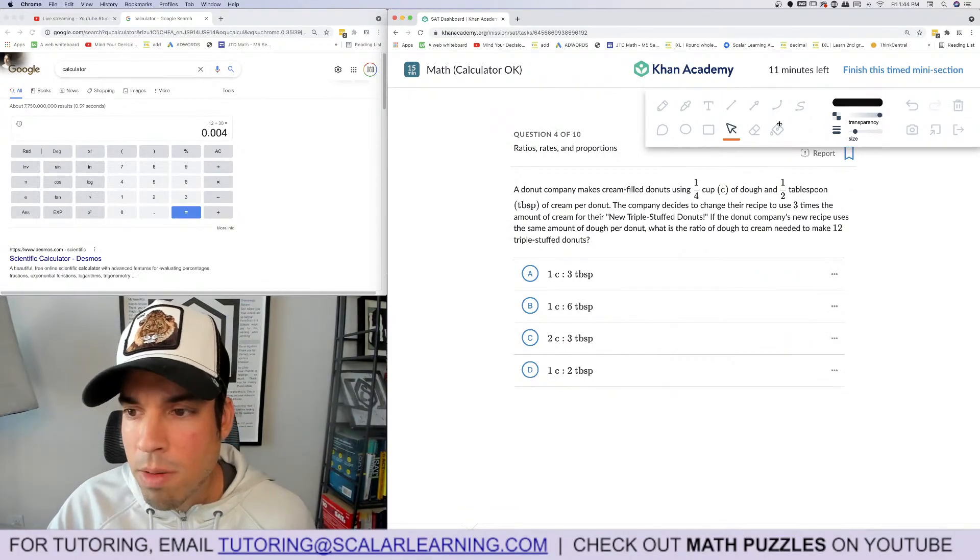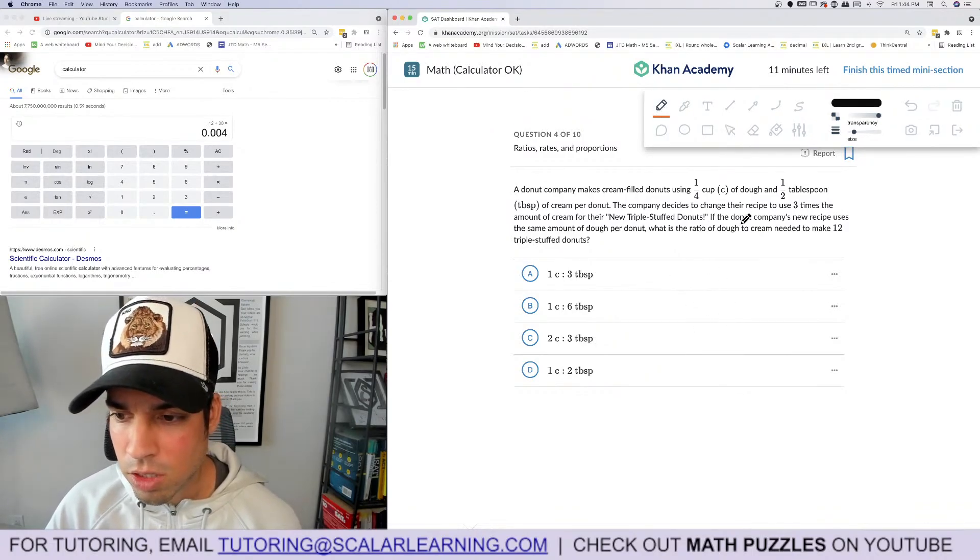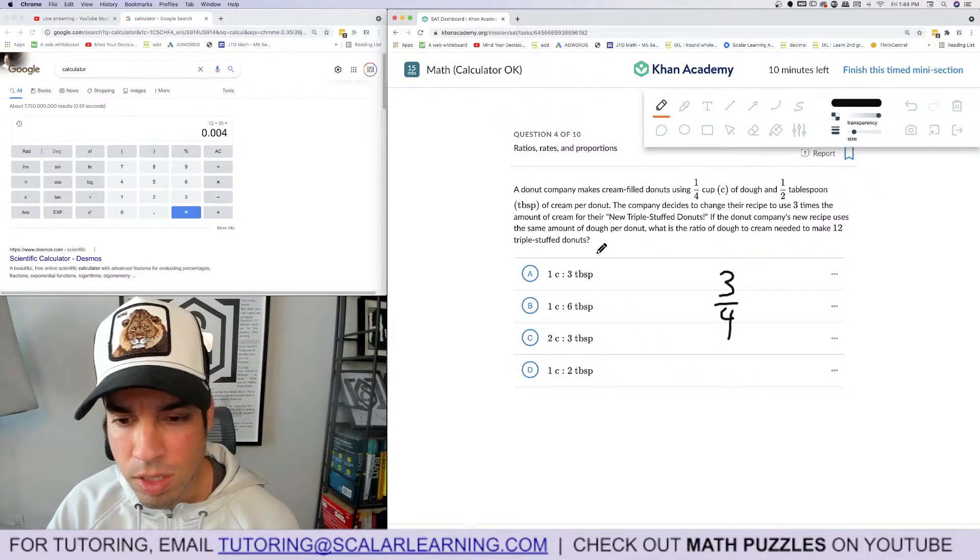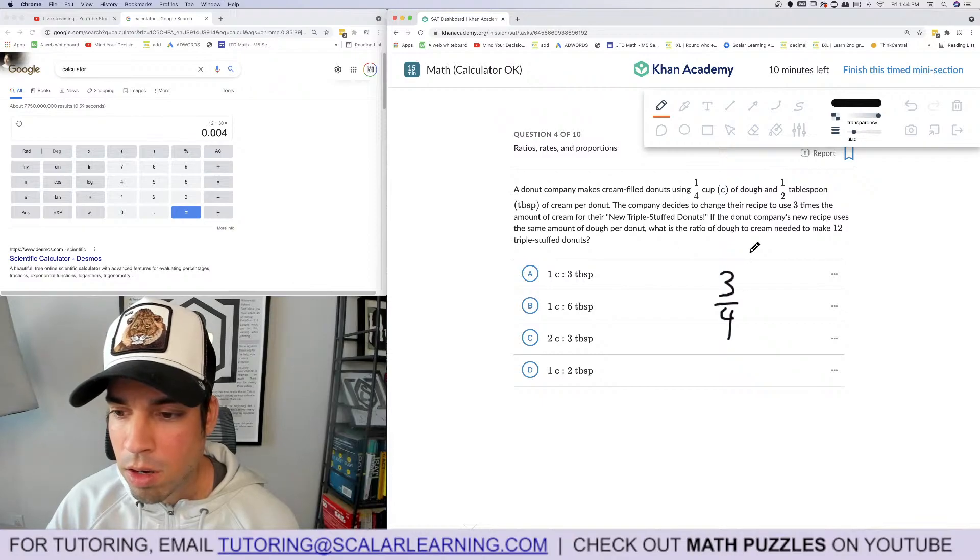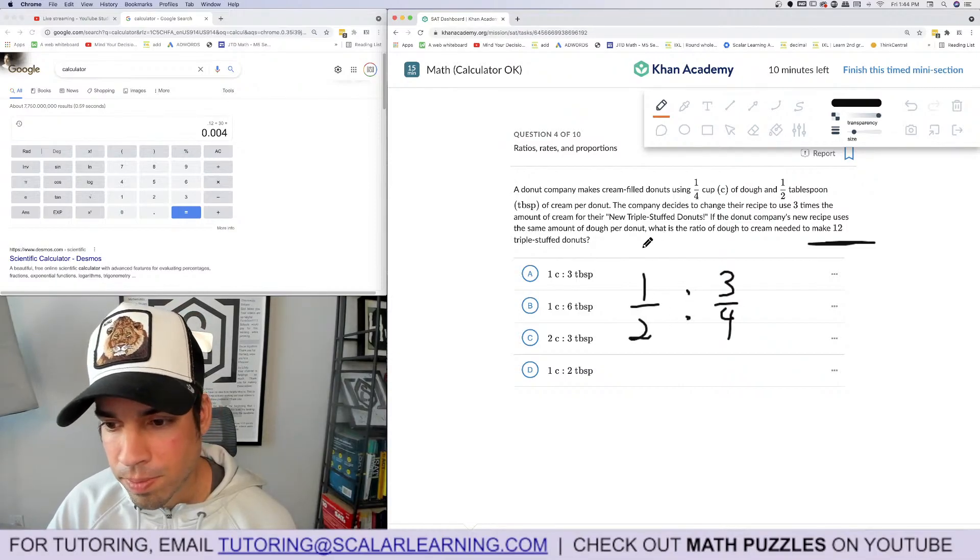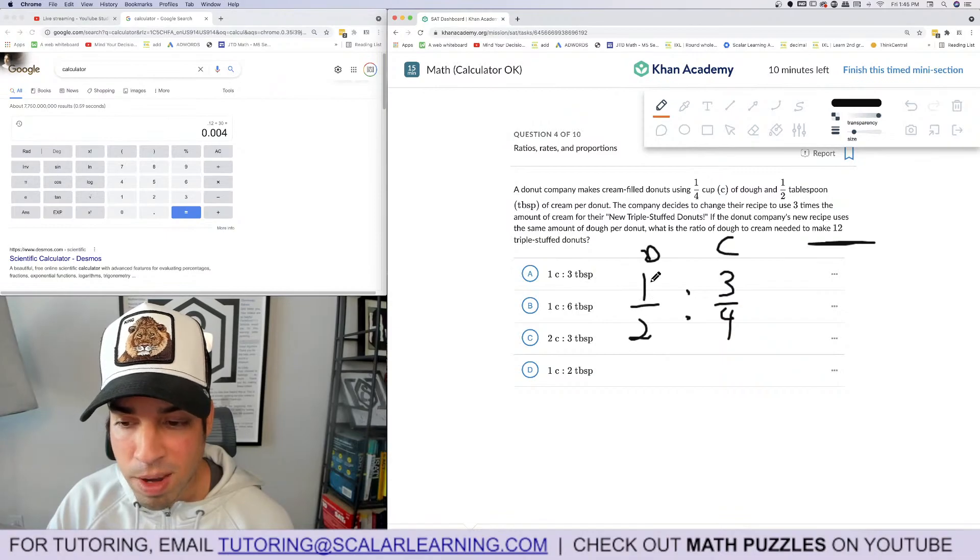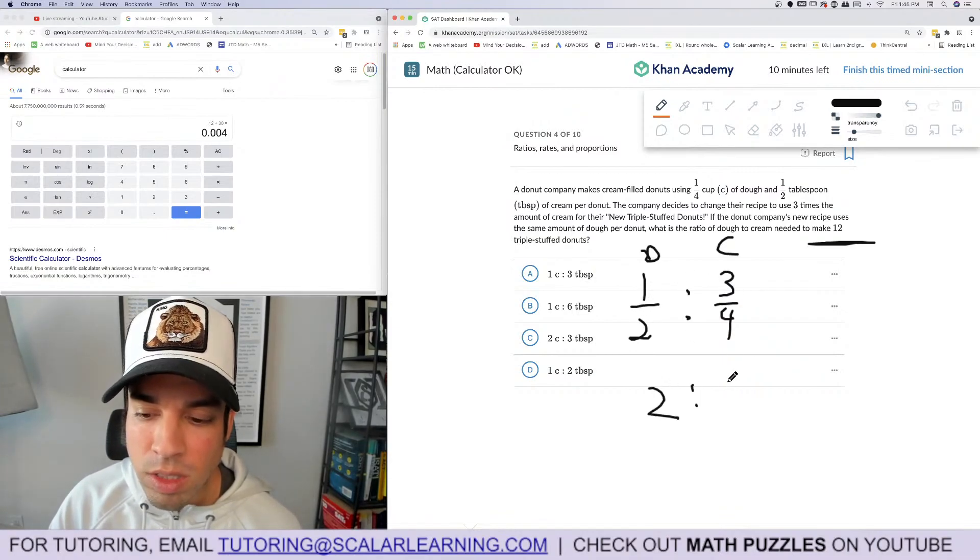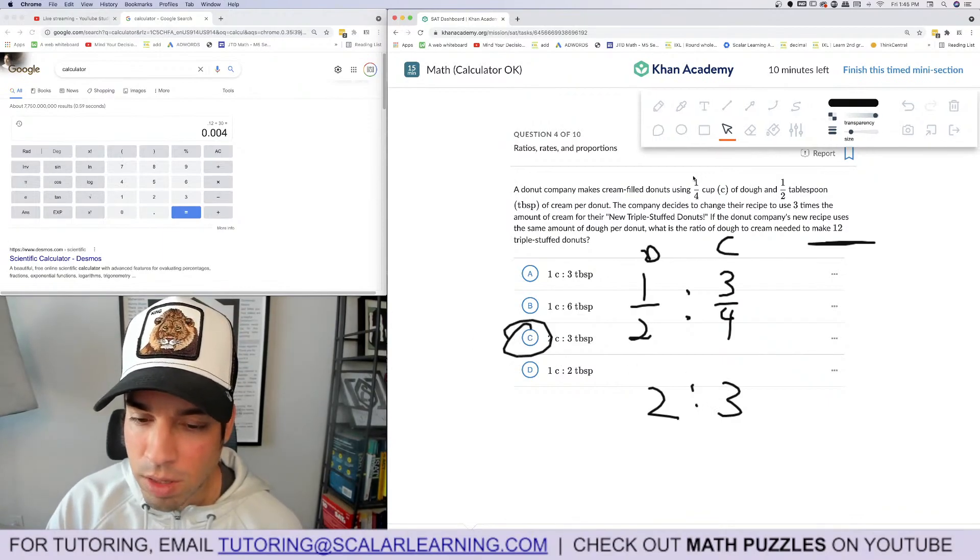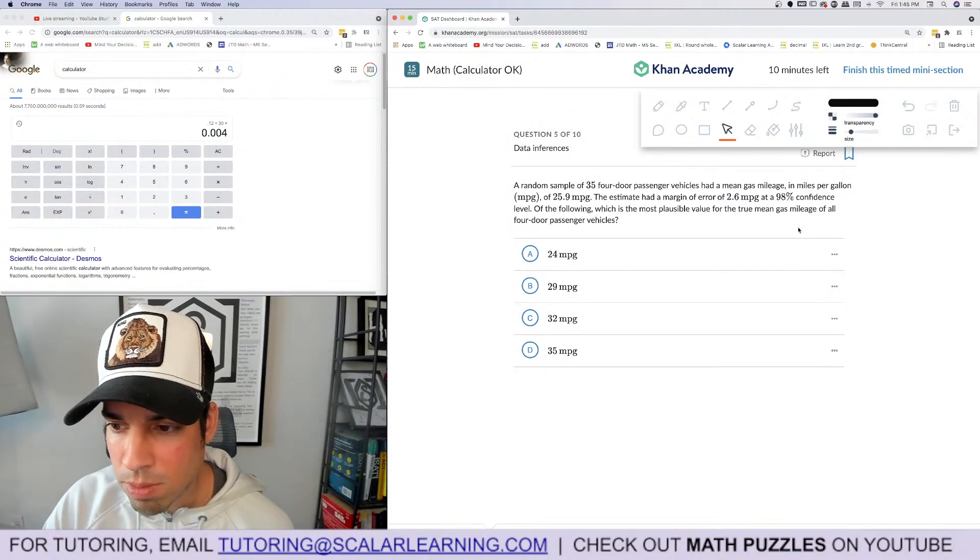Number four: A donut company makes cream filled donuts using one fourth cup dough and one half tablespoon of cream per donut. The company decides to change the recipe to use three times the amount of cream, so that's three fourths cup. If the donut company's new recipe uses the same amount of dough, what is the ratio of dough to cream needed to make 12? This is irrelevant but what's the ratio of dough to cream? They obviously don't have it as a fraction, they have it as whole numbers, so I can multiply both of these by four to get a whole number. Four times one half is two, four times three fourths is three, so it should be a two to three ratio. C is the winner.